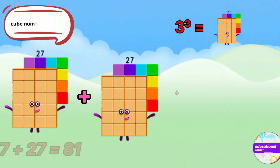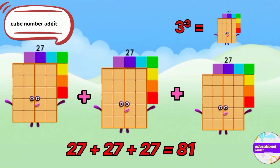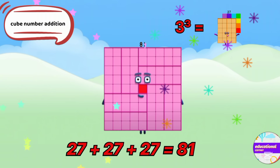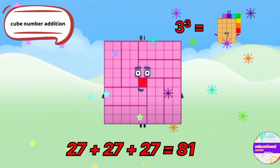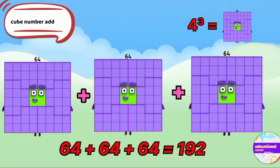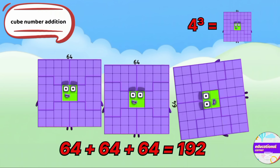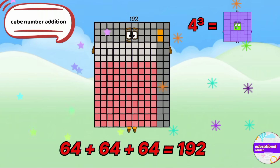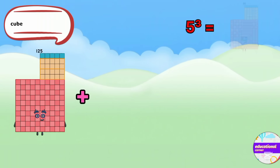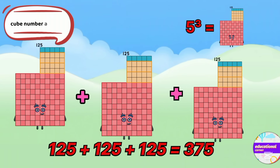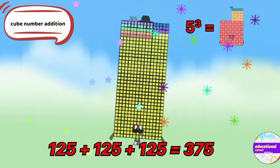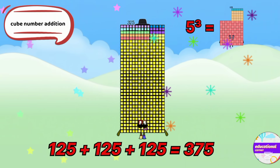The cube of 3 is 27. We add 27 three times, so we get 81. The cube of 4 is 64. Add 64 three times, so the answer is 192. The cube of 5 is 125. We add 125 three times, the answer is 375.